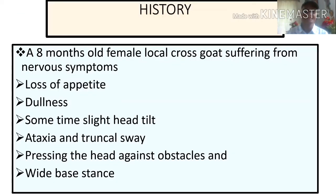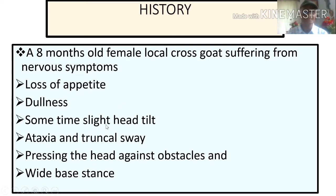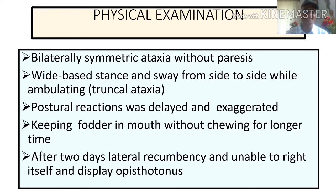In our case, the patient was an eight-month-old female local crossbred goat suffering from nervous symptoms. The history given by the farmer included loss of appetite, dullness, slight head tilt, ataxia, truncal sway, and pressing the head against obstacles. There was also a wide base stance. These are the history points provided by the farmer.